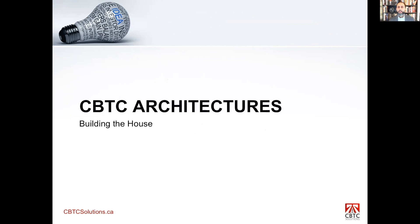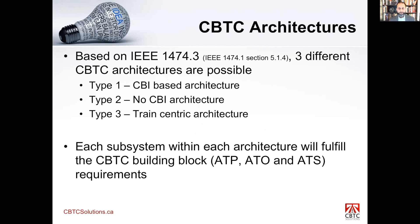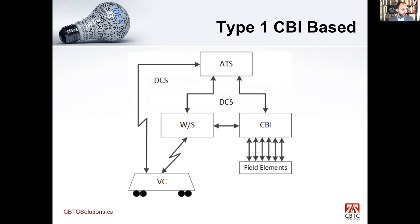Now we've defined the foundation of a CBTC system, which was the building blocks: ATO, ATP, and ATS. Based on IEEE 1474.3, we can have three types of architectures: Type 1, which is CBI-based; Type 2, which is no CBI; and Type 3, which is a train-centric architecture. Each one of these architectures is going to satisfy most of the functions defined in the building block sections, and I'll show you how that's done.